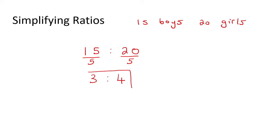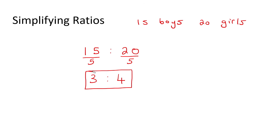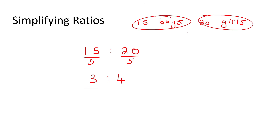If I look at three and four, is there a number that can go into both of those? No — therefore, that is the most simplified ratio we have. So you have 15 boys and 20 girls, but simplified, that means for every three boys there are four girls. That is what simplifying a ratio means — you're just breaking it down smaller.